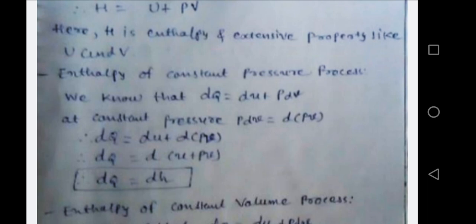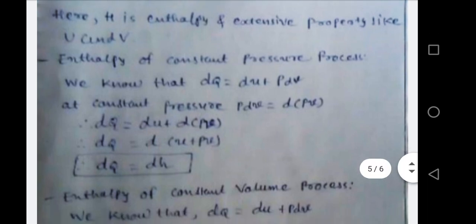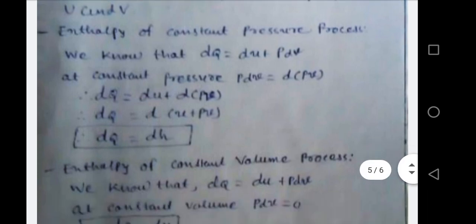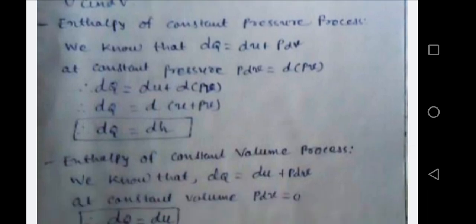For constant pressure, p dV equals differentiation of p into V, so dQ equals dU plus d(pV), which gives dQ equals d(U plus pV), therefore dQ equals dH. This means: for a constant pressure process, the rate of change of heat equals the rate of change of enthalpy. Please remember: for a constant pressure process, rate of change of heat equals rate of change of enthalpy.